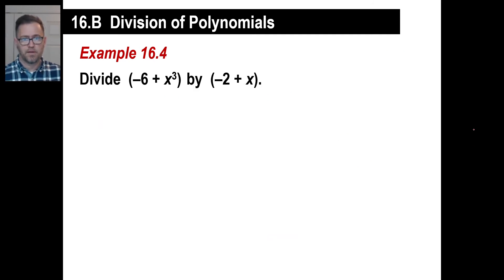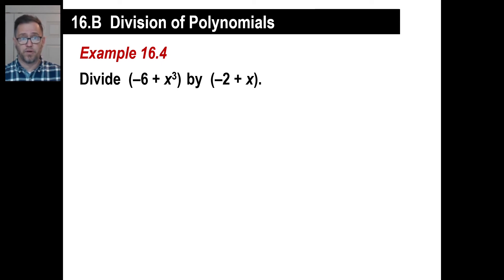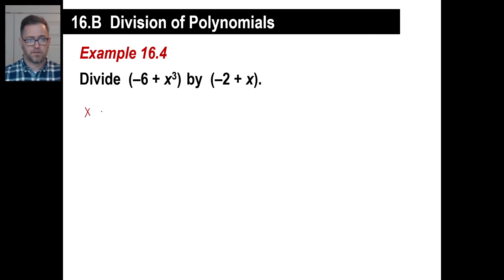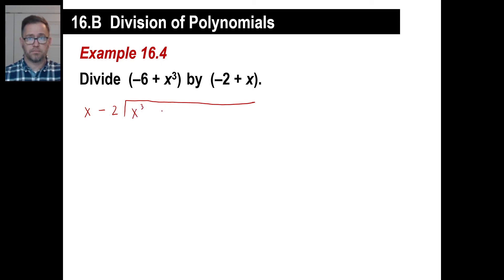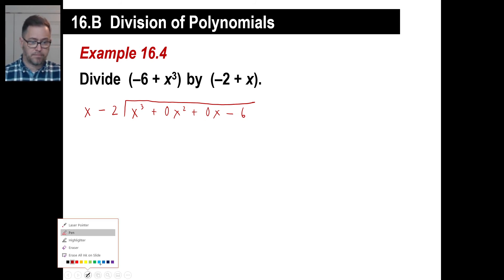Now this one's weird — there's something missing. What's missing that we had on the previous problem? x squared is missing, and x to the first power is missing. So what we're going to have to do is put in placeholders. We know what goes outside: x minus 2. For the inside, we have x to the third, then we put zero x squared and zero x as placeholders, and then negative 6 at the end.